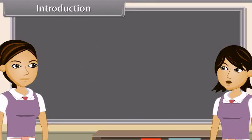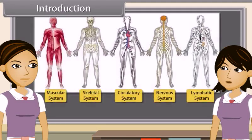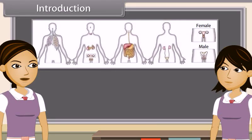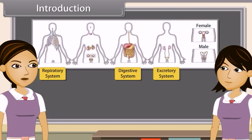As we already know, the body of higher animals like man is formed of a number of organ systems. Some examples are the digestive system, respiratory system, circulatory system, excretory system, etc.